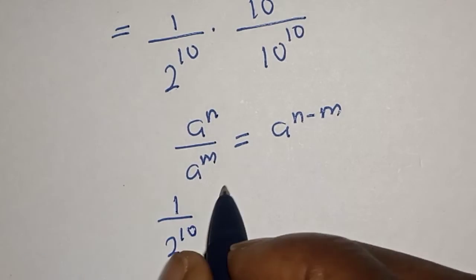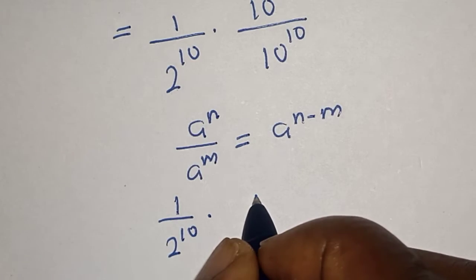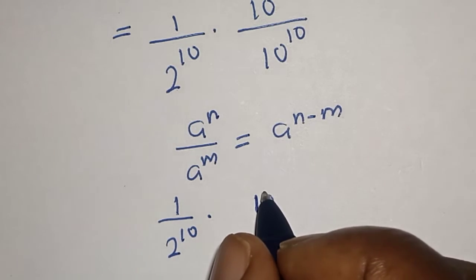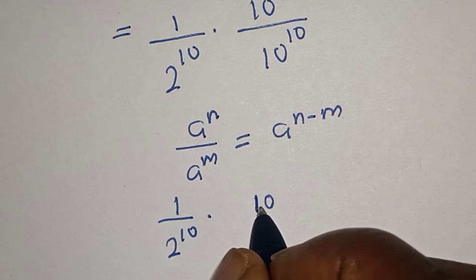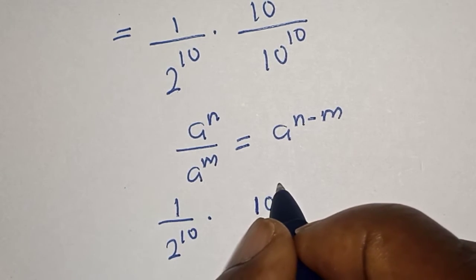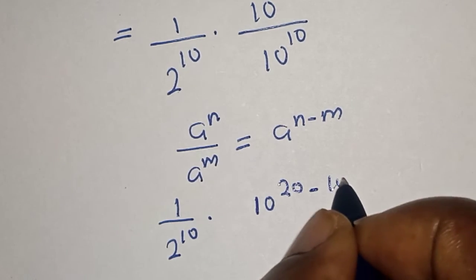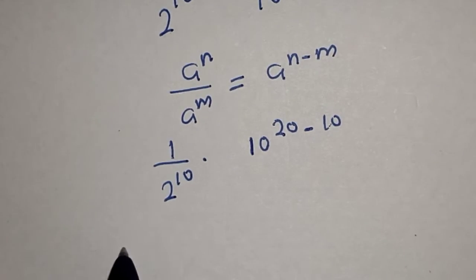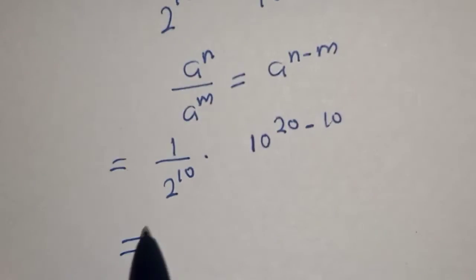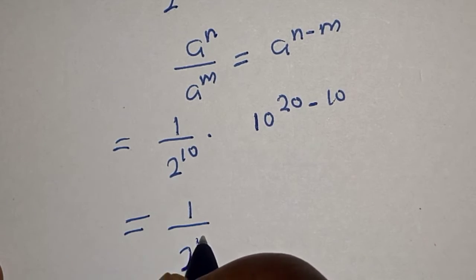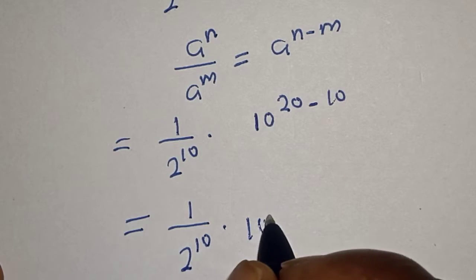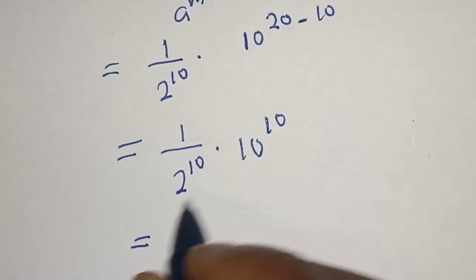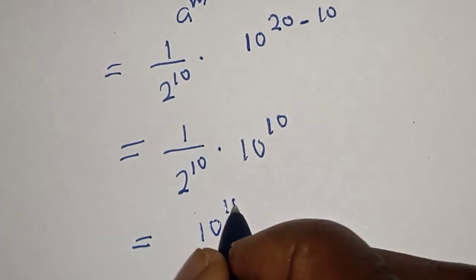Then here is 1 over 2 raised to power 10, multiplied by 10 raised to power 20 minus 10. This is equal to 1 over 2 raised to power 10, multiplied by 10 raised to power 10. Multiplying these together we have 10 raised to power 10 over 2 raised to power 10.